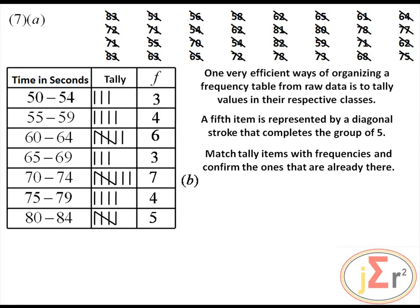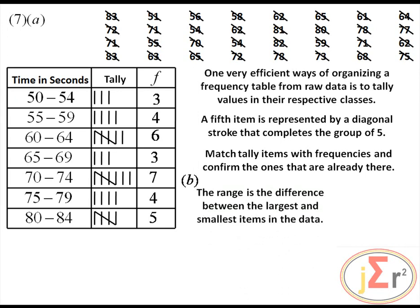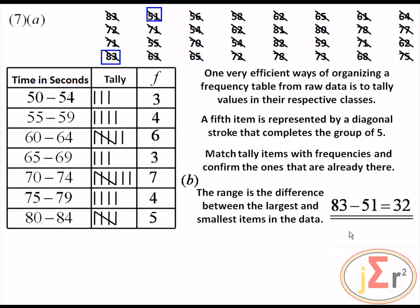Using the raw data, determine the range. The range is the difference between the largest and smallest values: the largest is 83 and the smallest is 51. So the range equals 83 minus 51, which equals 32.